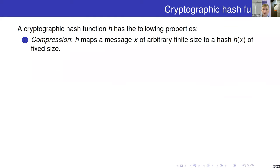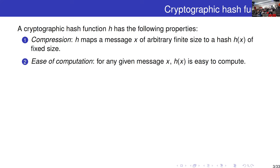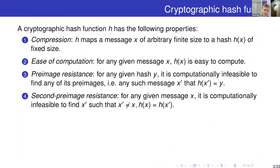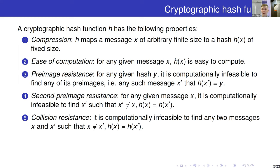A cryptographic hash function has five properties. First, it should map a message of arbitrary finite size to a hash of fixed size. Second, it should be easy to compute — just a fraction of a second. Third, pre-image resistance: for any given hash output, it should be computationally infeasible to find the corresponding input message. Fourth, second pre-image resistance: for any given message, it is almost impossible to find another message with the same hash. Fifth, collision resistance: it is extremely hard to find any two messages with the same hash. These three resistances correspond to three types of attacks, and usually the most weak resistance is collision resistance.